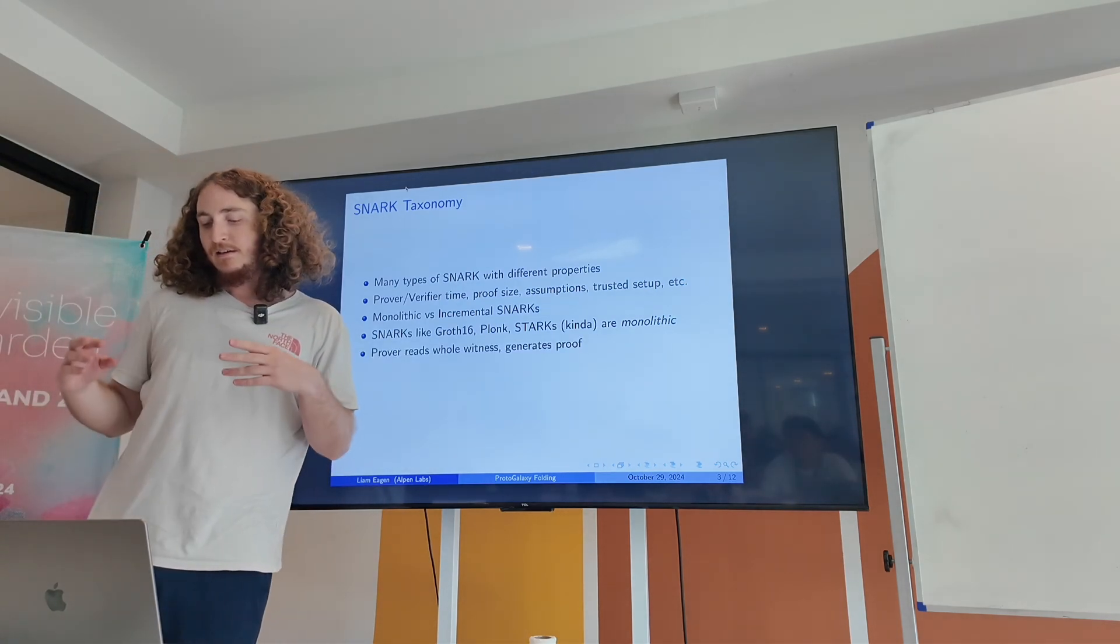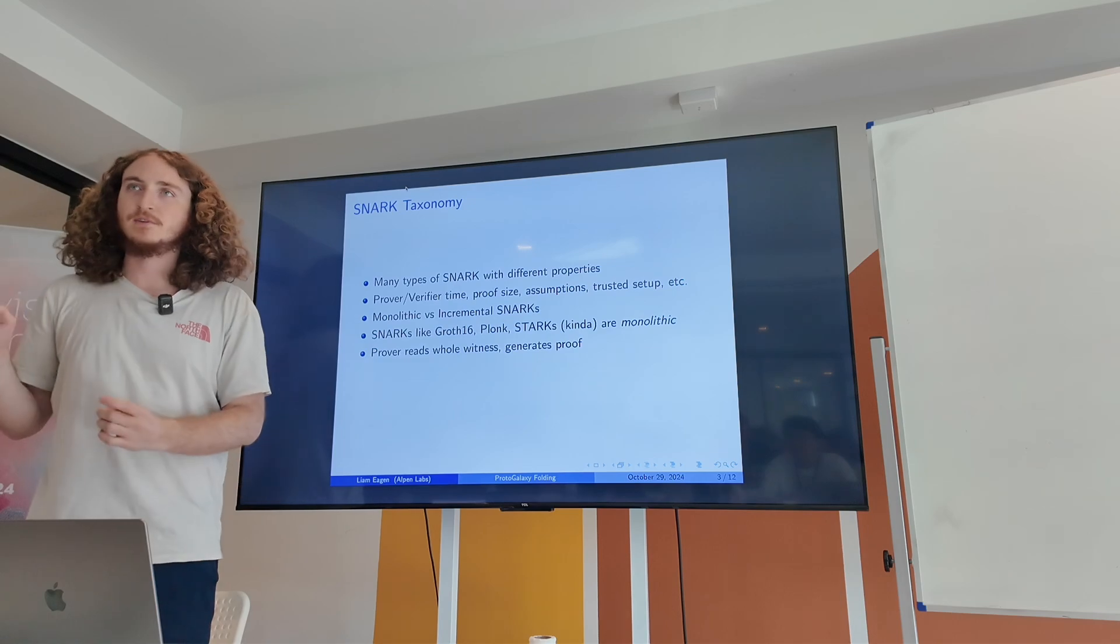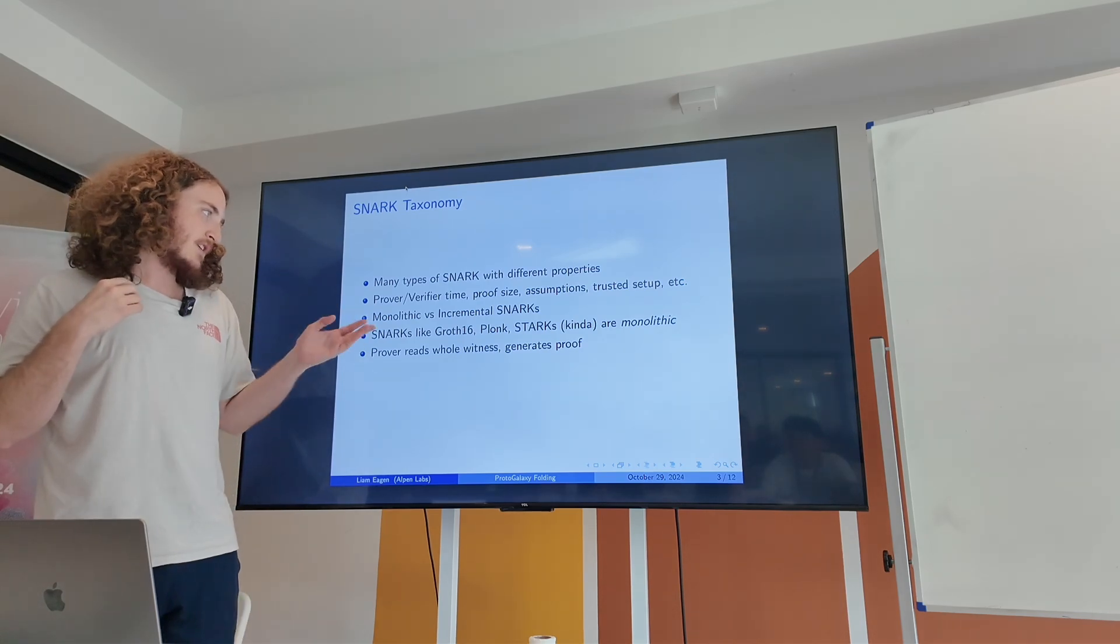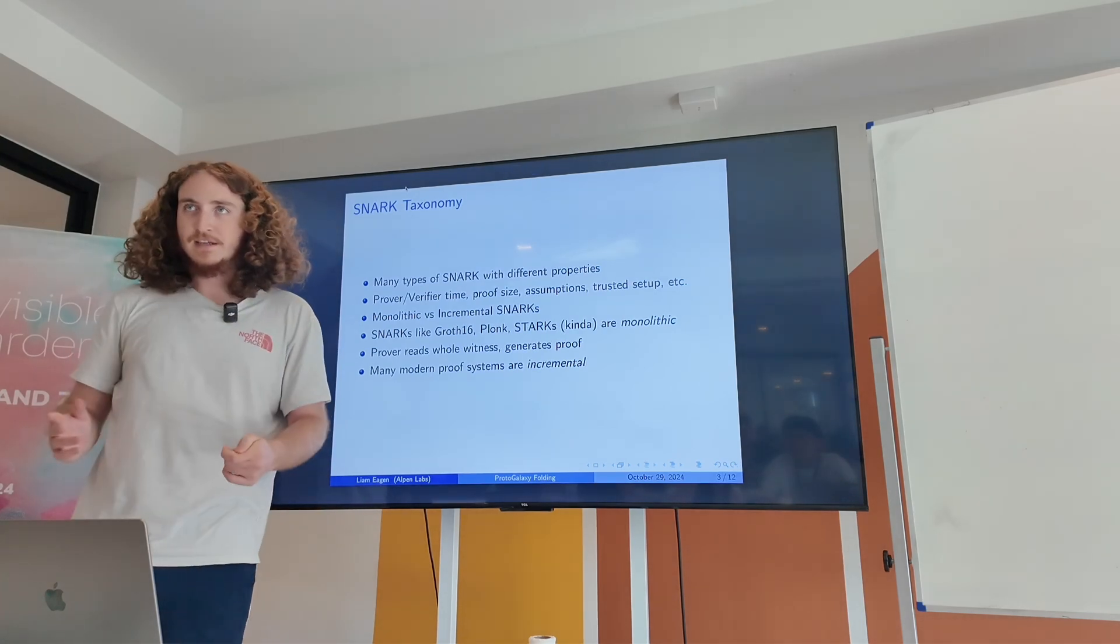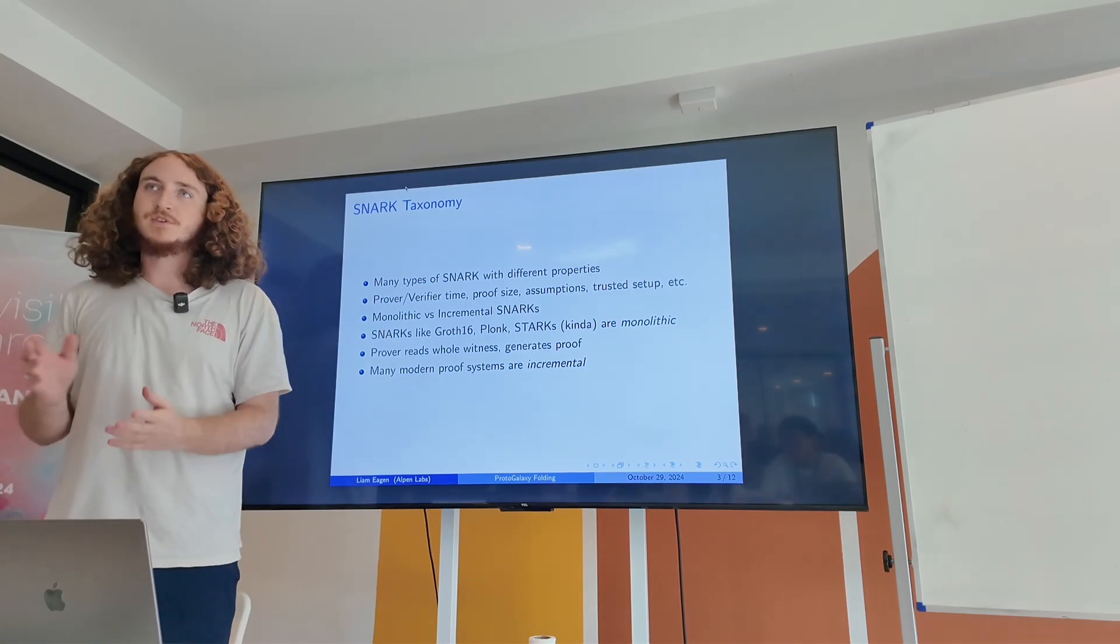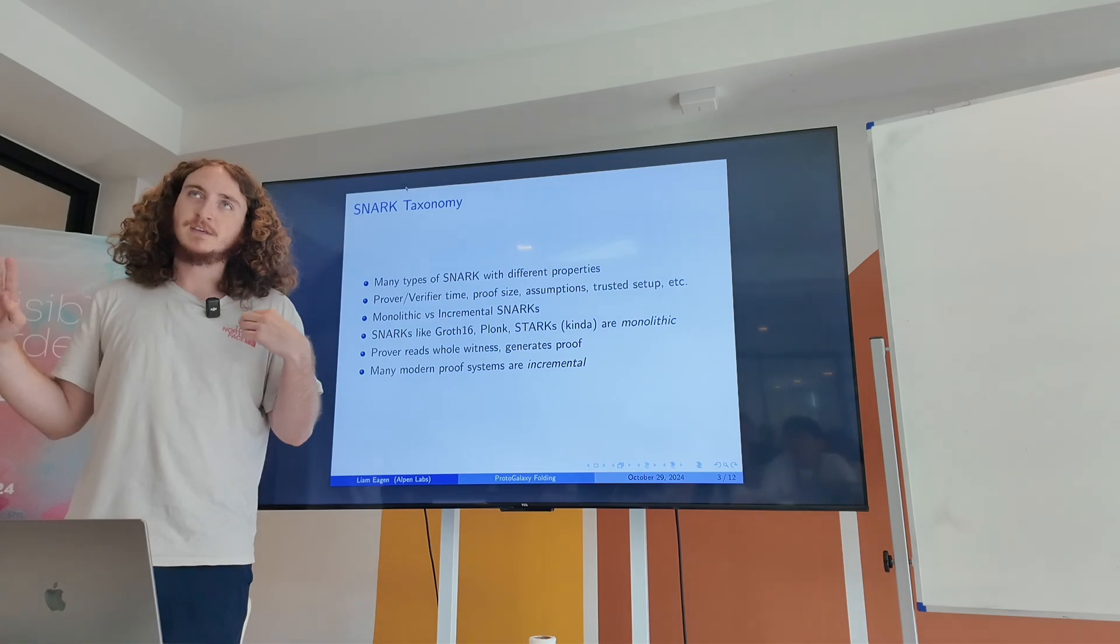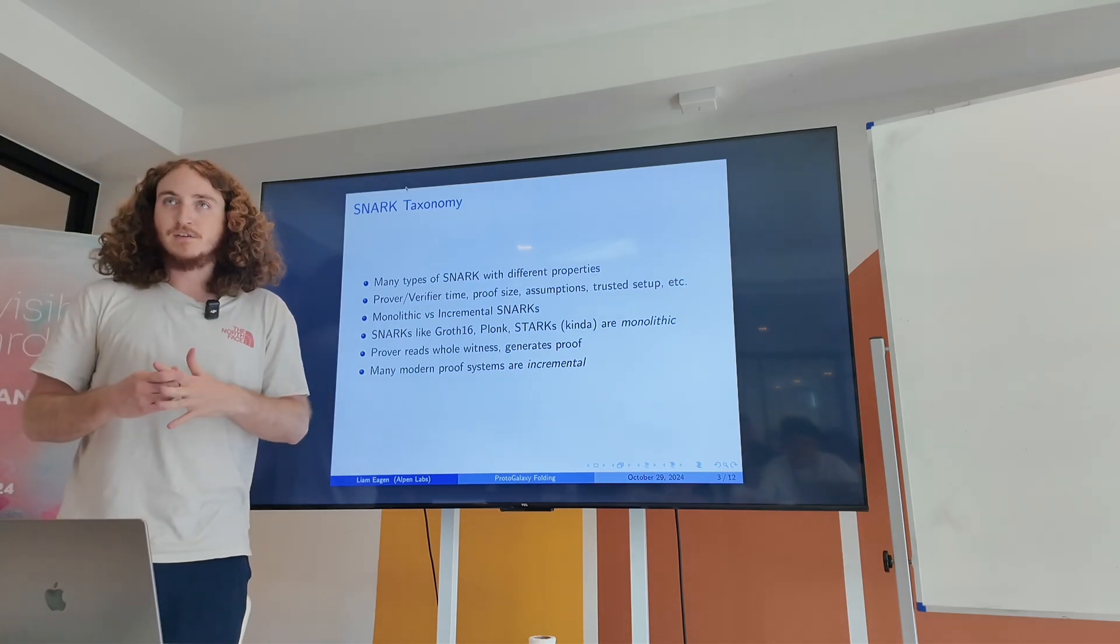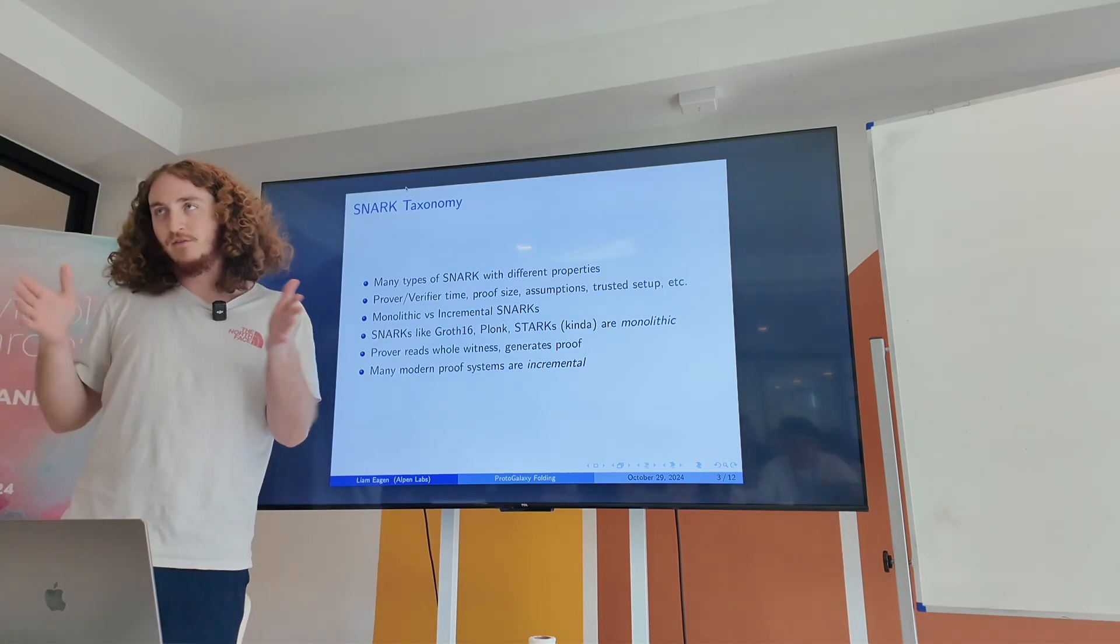But there's one important distinction between types of SNARKs that makes sense to focus on for this talk, which is monolithic versus incremental SNARKs. SNARKs like Groth16 and Plonk and STARKs are monolithic. What I mean by that is the prover has a witness for their relation and they just generate the proof all at once.